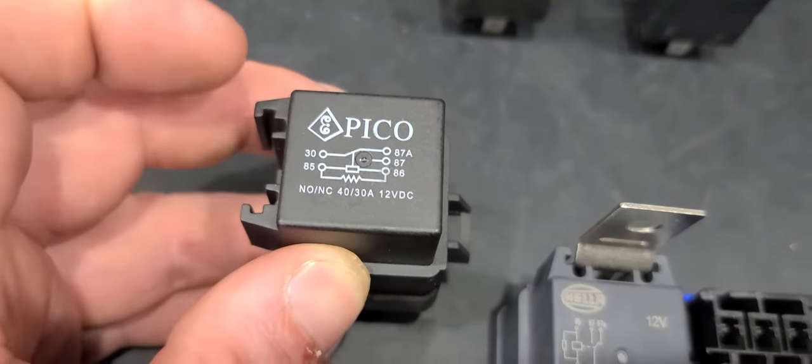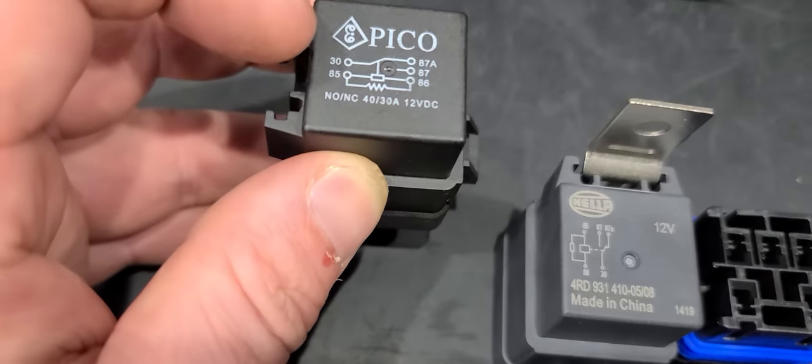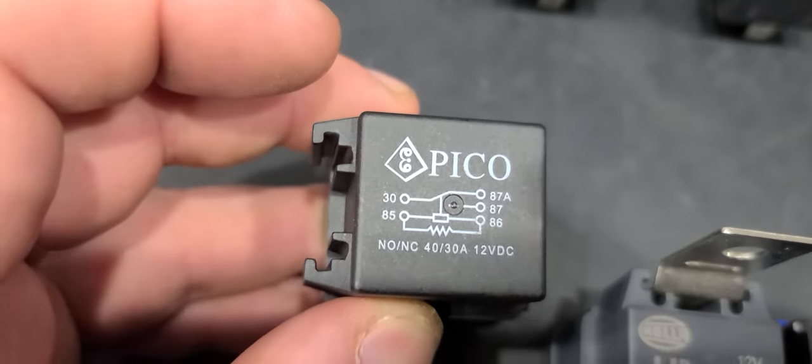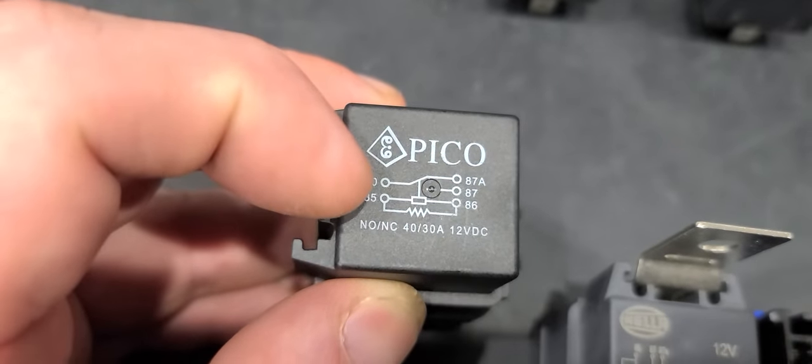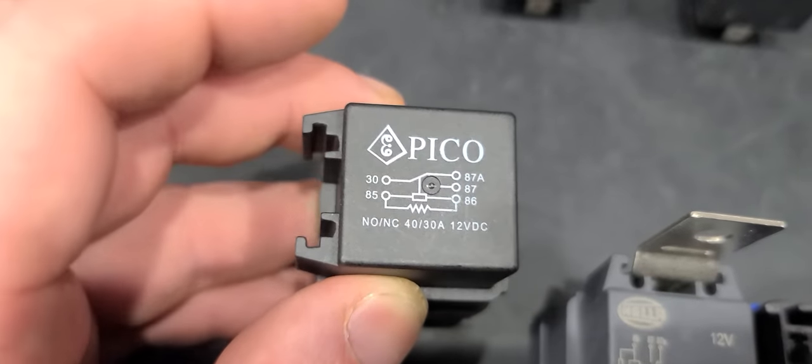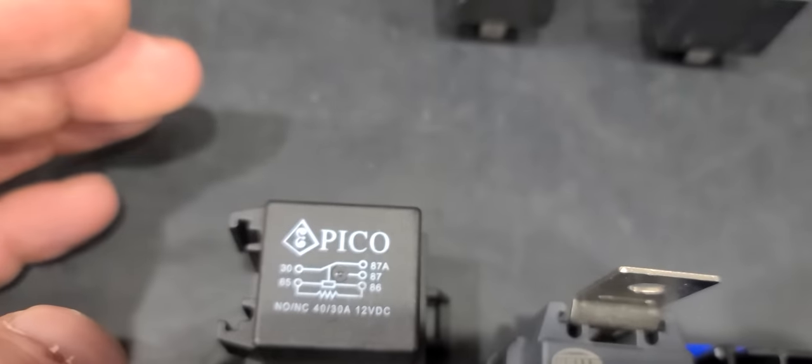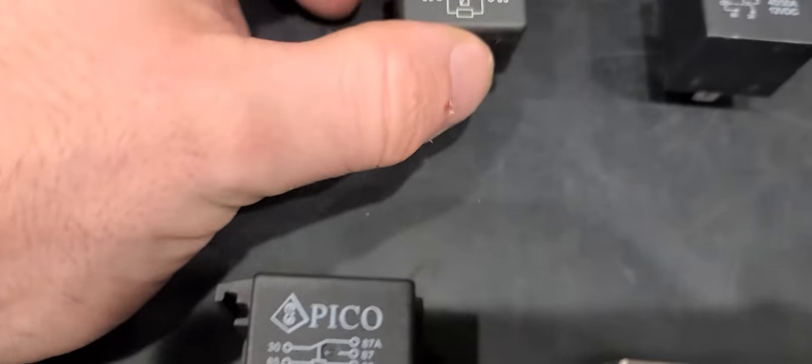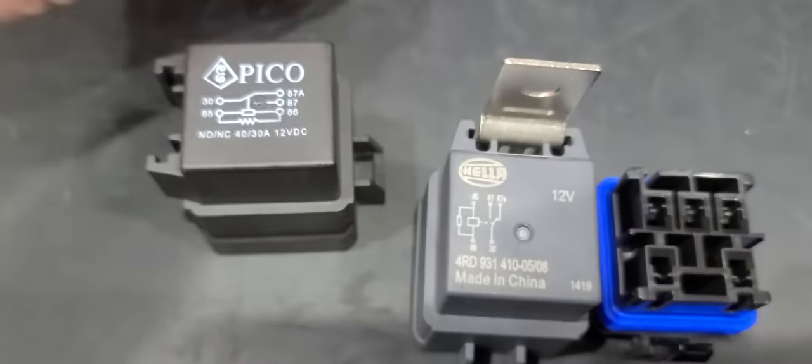This picture here is showing you that it's rested with no power on it - it's sitting on 87a. When you apply power and ground to it, it transfers the load over to 87.